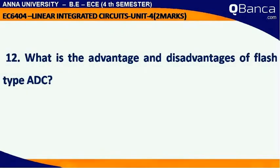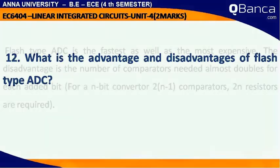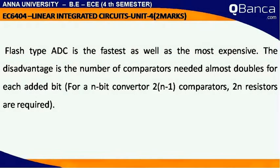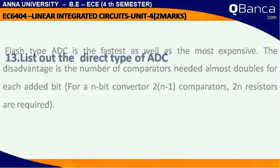What is the advantage and disadvantage of flash type ADC? Flash type ADC is the fastest as well as the most expensive. The disadvantage is the number of comparators needed almost doubles for each added bit. For an n-bit converter, 2^(n-1) comparators and 2^n resistors are required.